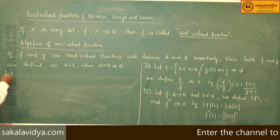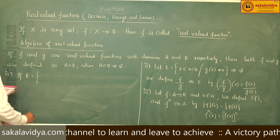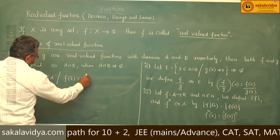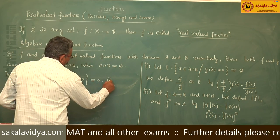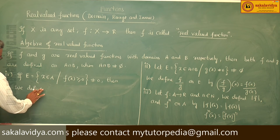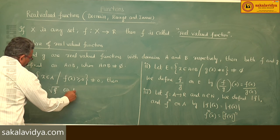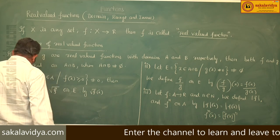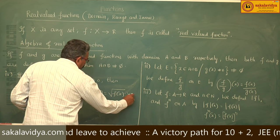Fourth: if E is the set of x belonging to A such that f(x) is greater than or equal to zero, that means f(x) is positive, then we define the square root of f on E by: (√f)(x) = √(f(x)), for every x belonging to E.